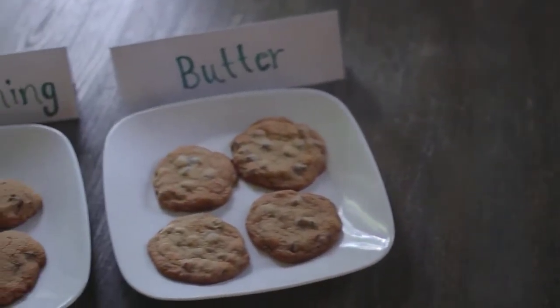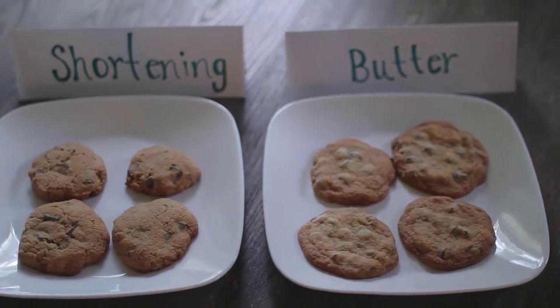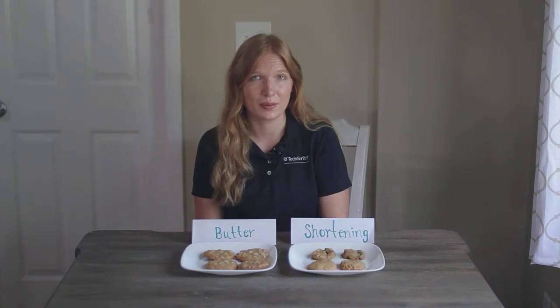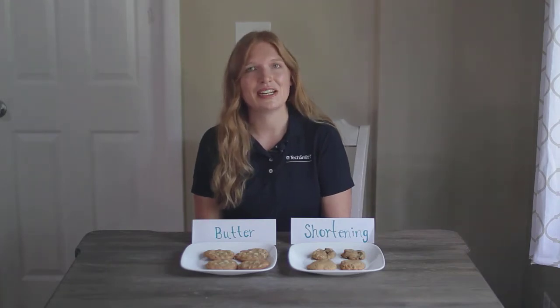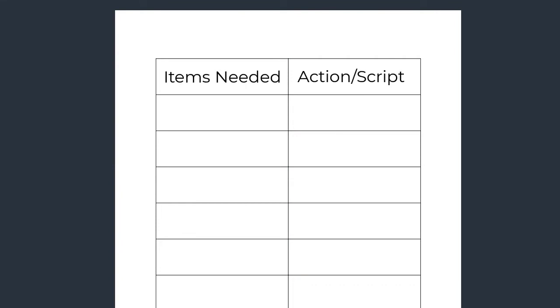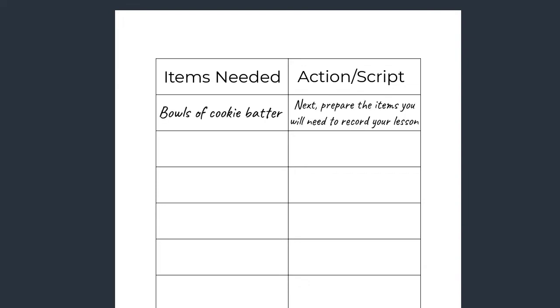Next, prepare the items you will need to record your lesson. Write down a list of talking points or steps that you will need to record in the video. For each step, think about the supplies you will need. I like to create a document with a table that contains two columns — one listing the actions and the other listing the items needed to complete that action. Without a list, it is easy to forget a step.